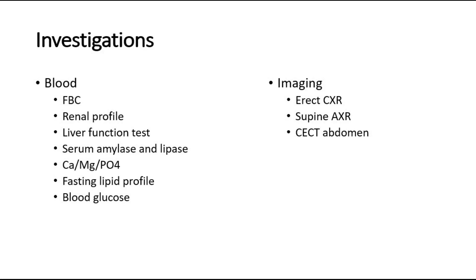For imaging, erect chest x-ray is done to rule out perforated peptic ulcer by looking for gas under the diaphragm. Supine abdominal x-ray may show the sentinel loop sign — a dilated proximal jejunal loop near the pancreas — or the colon cut-off sign, where there is distended colon from the ascending to mid-transverse colon with no air distally, due to localized ileus from inflammation around the pancreas. Calcifications within the pancreas may indicate chronic pancreatitis.